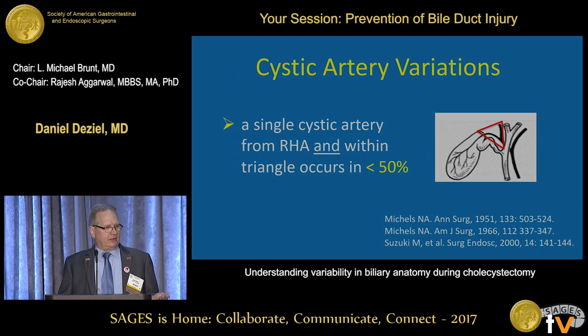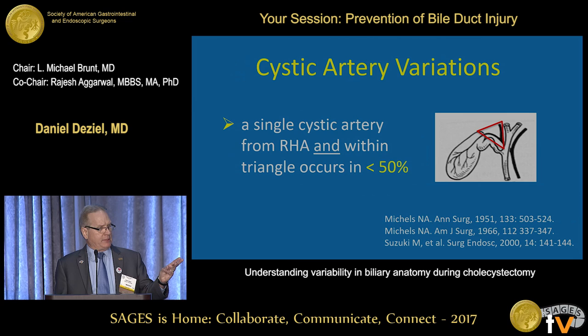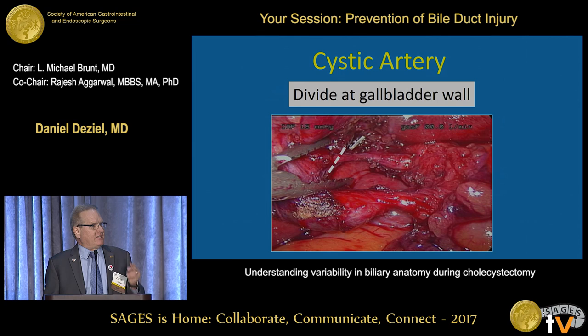If you put all the variations in the cystic artery together, typical anatomy — meaning a single cystic artery coming from the right hepatic and existing in the hepatocystic triangle — occurs in less than half the time.